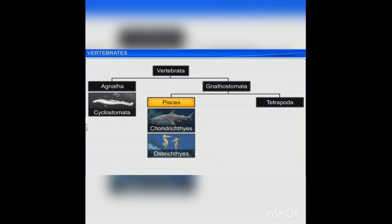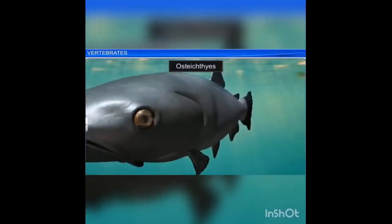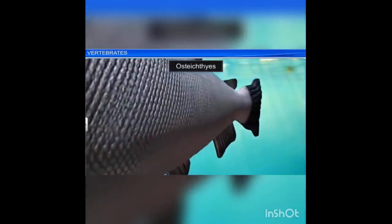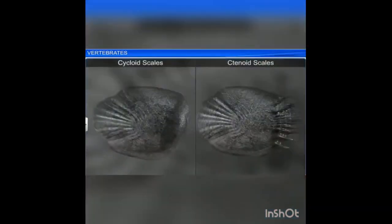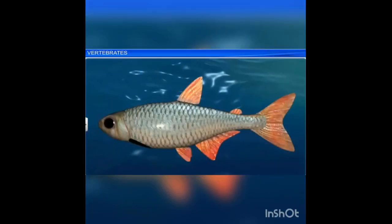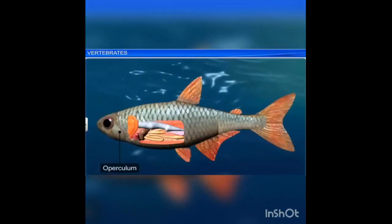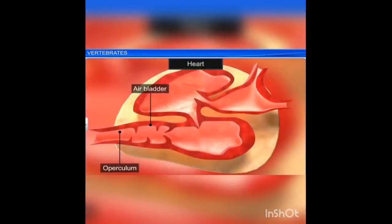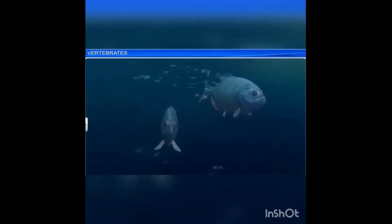Next is Osteichthyes — 'osteo' means bone, 'ichthyes' means fish. It includes both marine and freshwater fishes with a bony endoskeleton and spindle-shaped body. The skin is covered by ganoid, cycloid, or ctenoid scales. Respiration is by four pairs of filamentous gills covered by an operculum. A air bladder is present with or without a connection to the gut. Heart is two-chambered, and the air bladder helps in gaseous exchange and maintaining buoyancy in most ray-finned fishes.